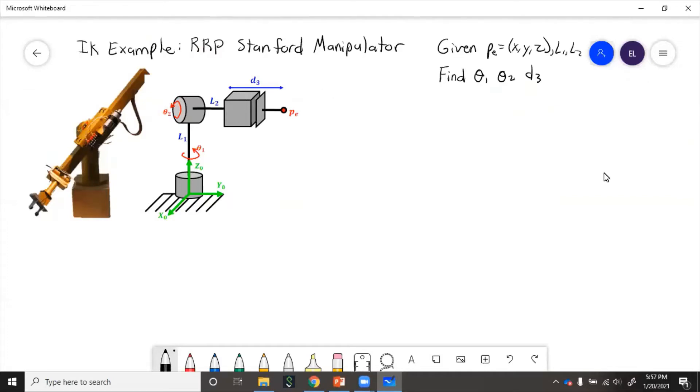In this example, we will solve the inverse kinematics for an RRP Stanford manipulator. Given the end effector position XYZ along with the links L1 and L2, we need to find the joint angles and distances: theta1, theta2, and d3.